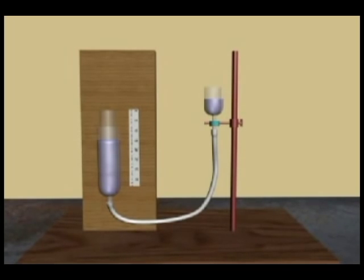The air column formed in the tube T has its own natural frequency. With the change in the length of this air column, its natural frequency of vibration also changes. When the natural frequency of this air column coincides with the frequency of the vibrating tuning fork, resonance takes place.